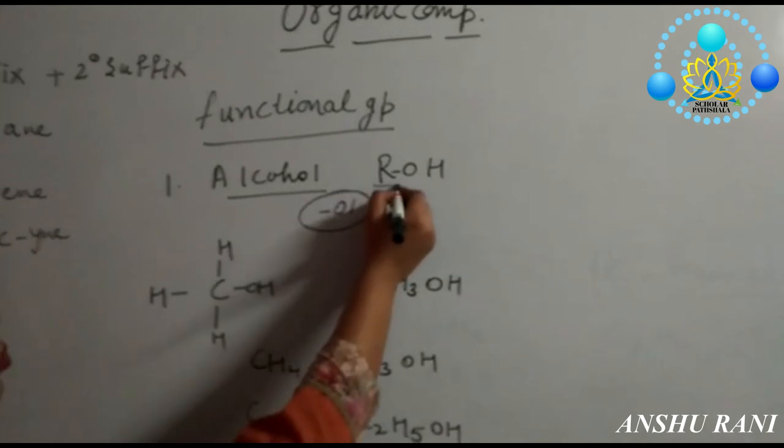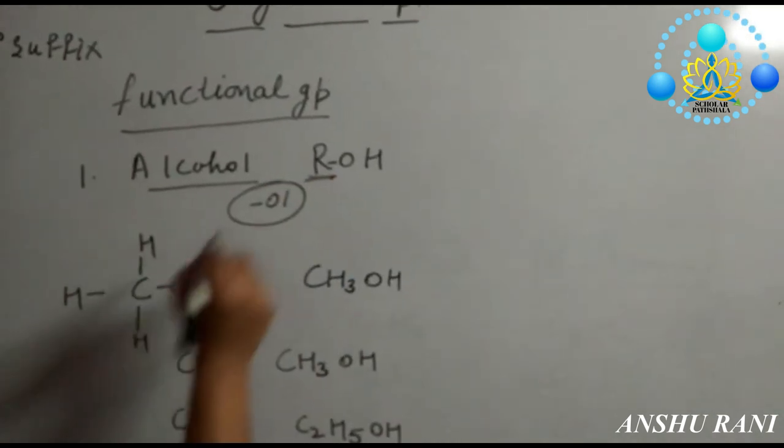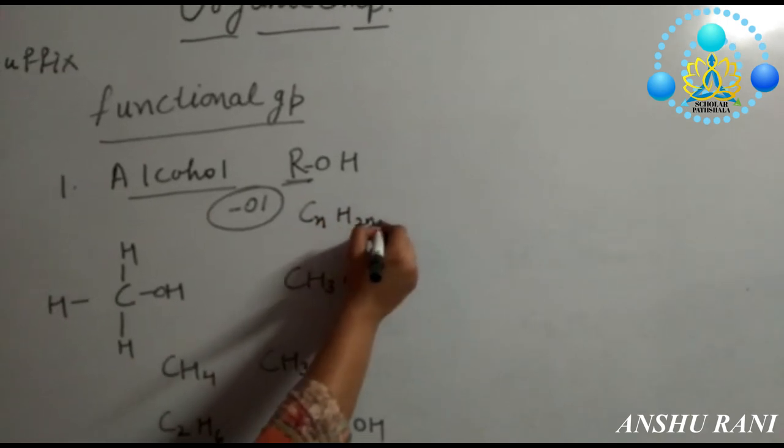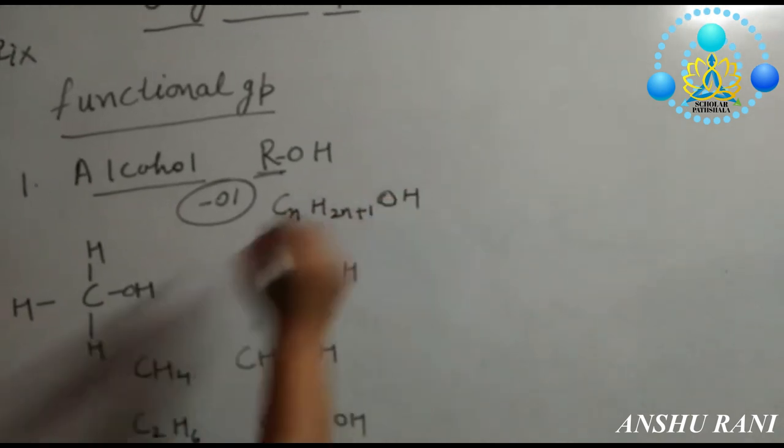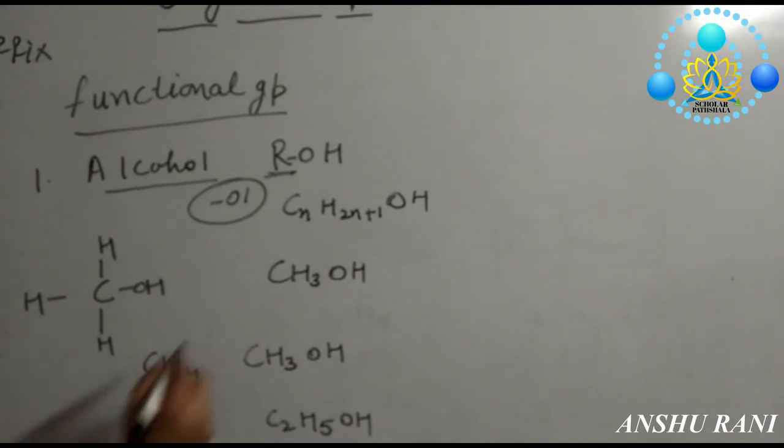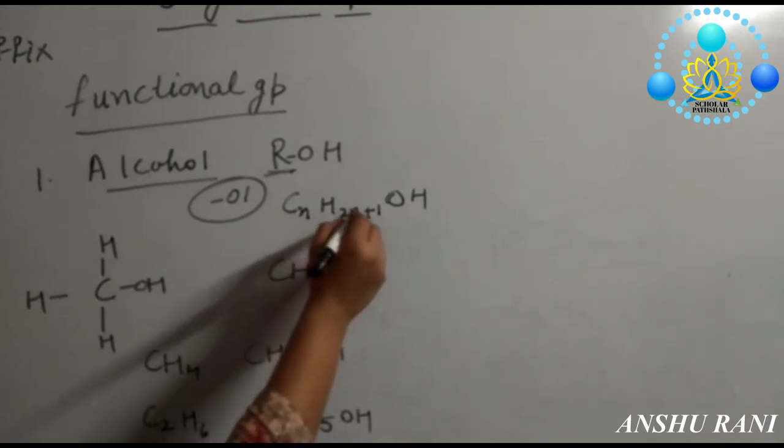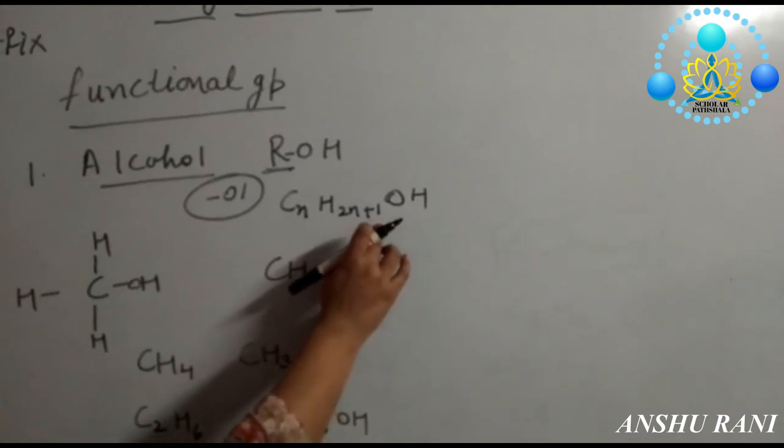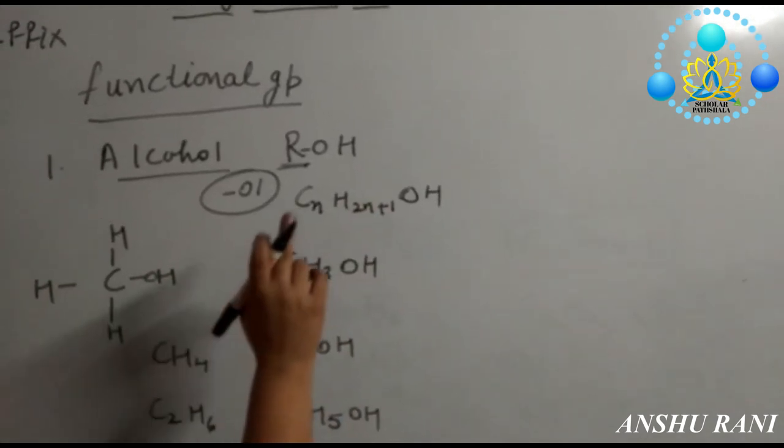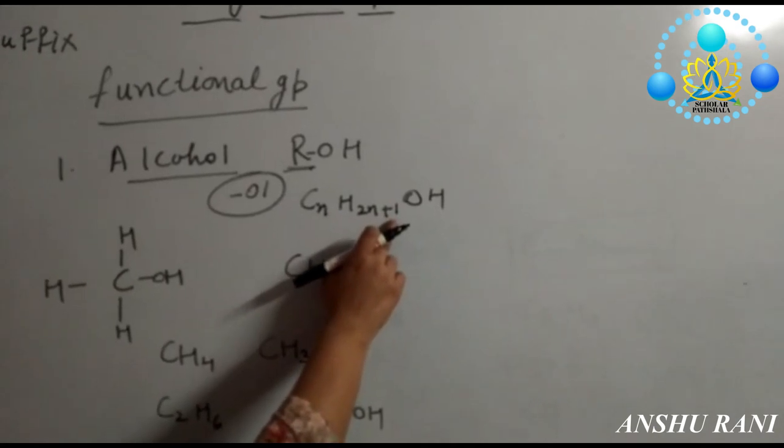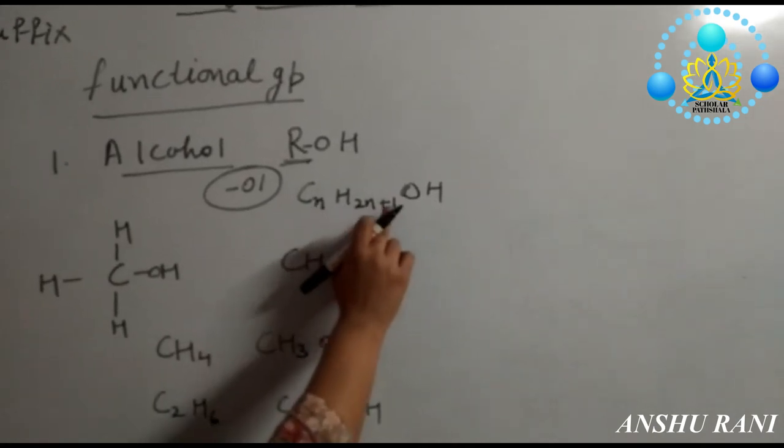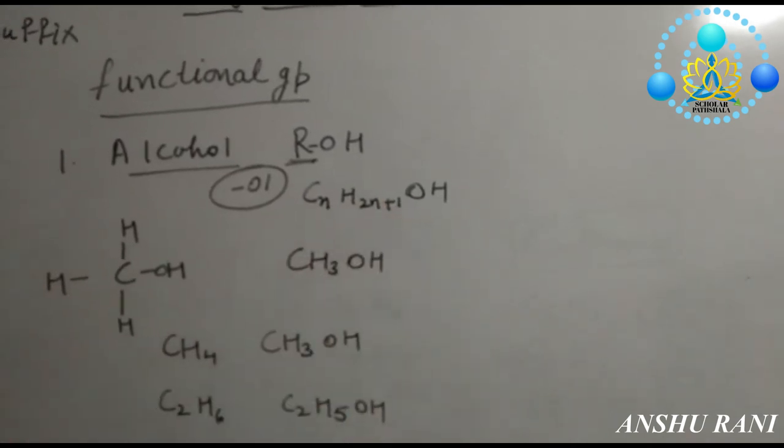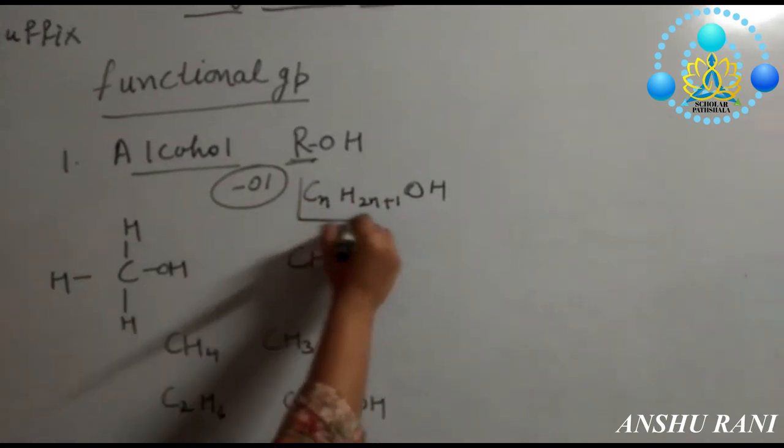In this general formula ROH, R is CnH2n+1-OH. What is this CnH2n+1? When it was CnH2n+2, it was alkane. Now one of the hydrogen atoms is taken out, so it has become CnH2n+1 and in place of that hydrogen we have taken OH.